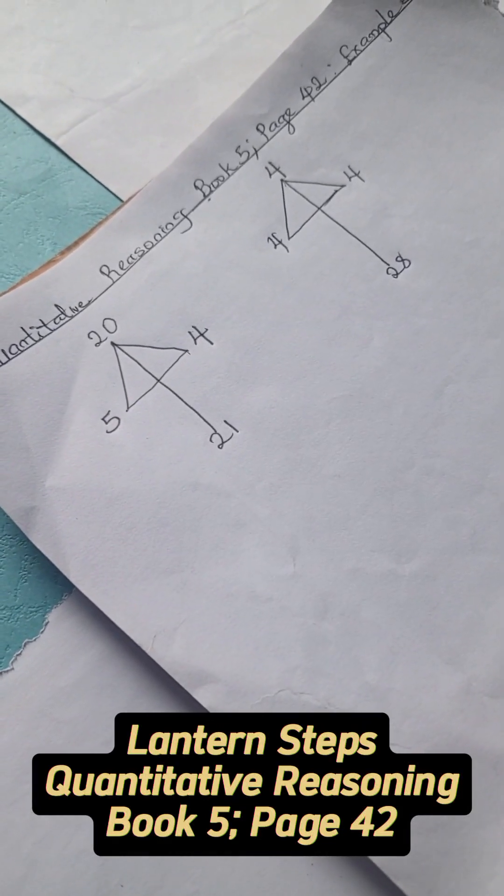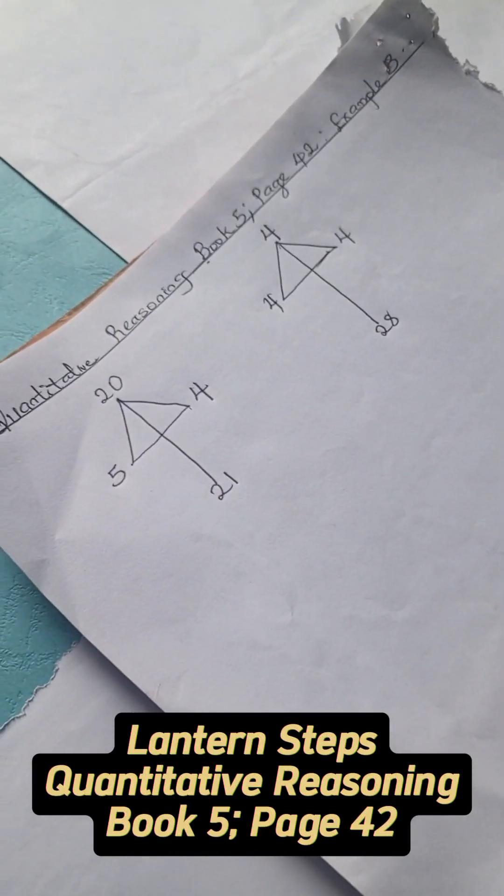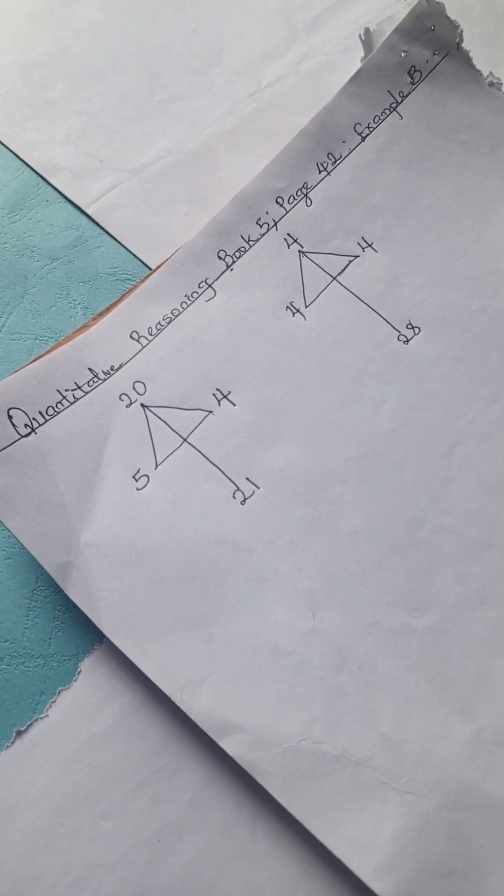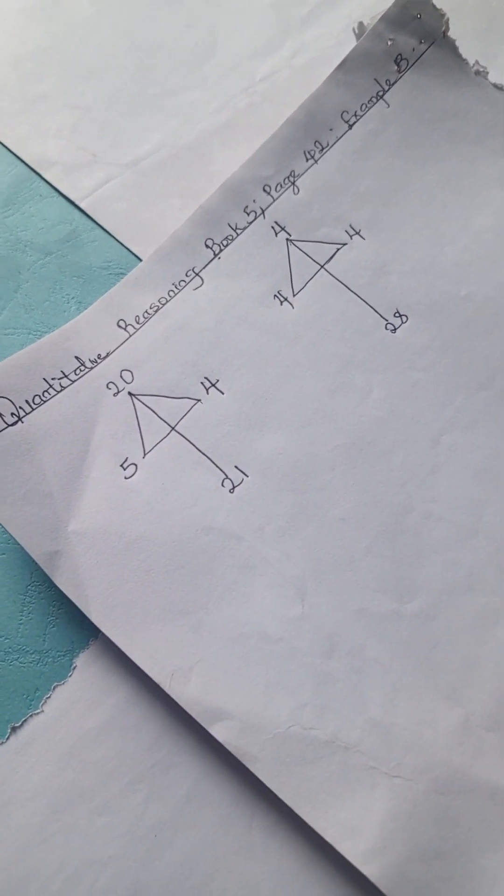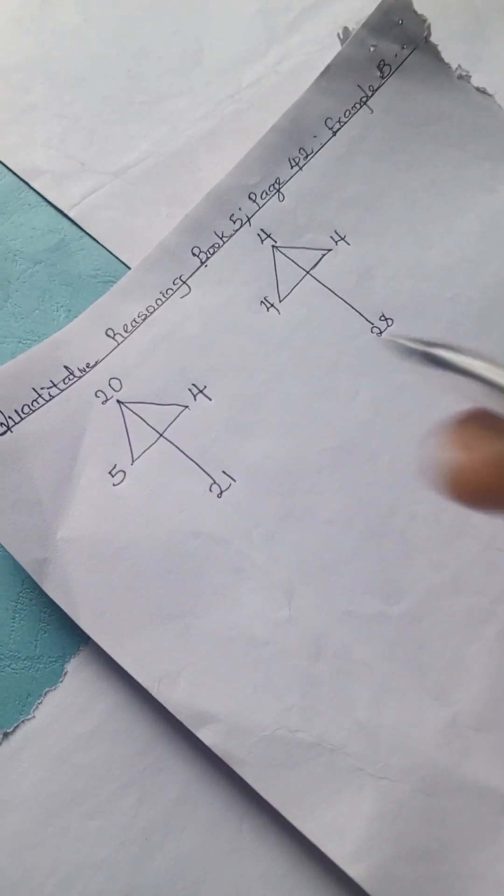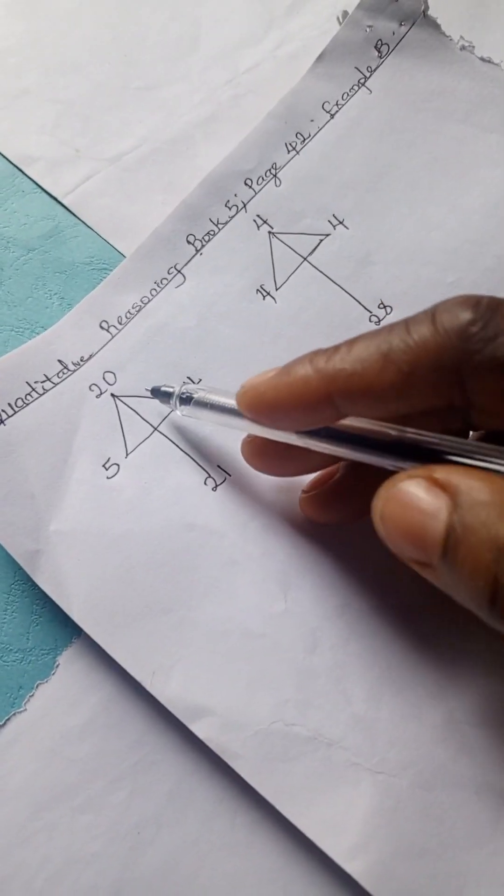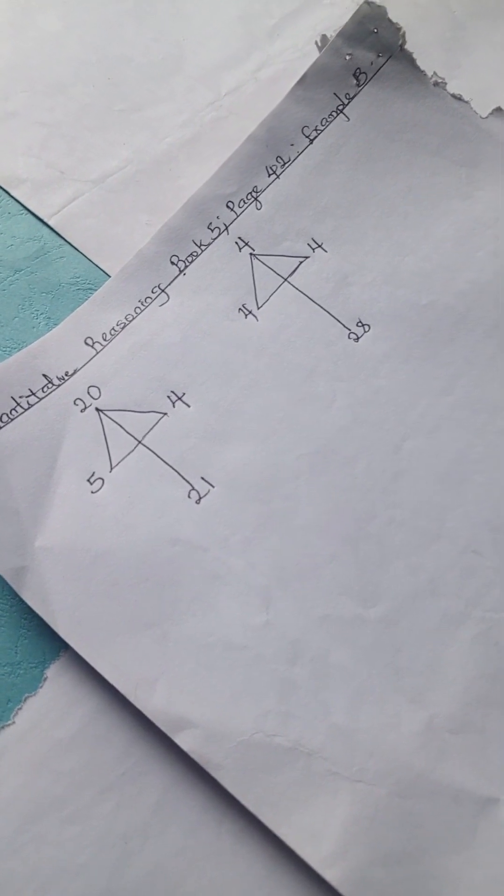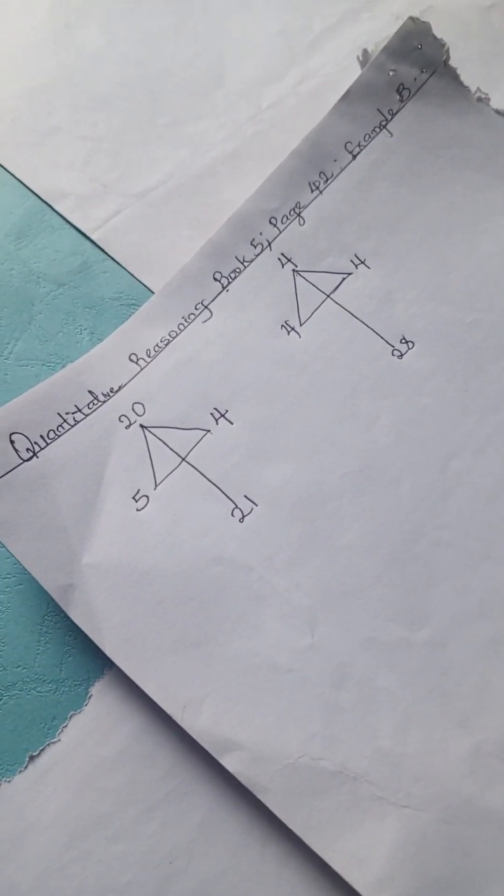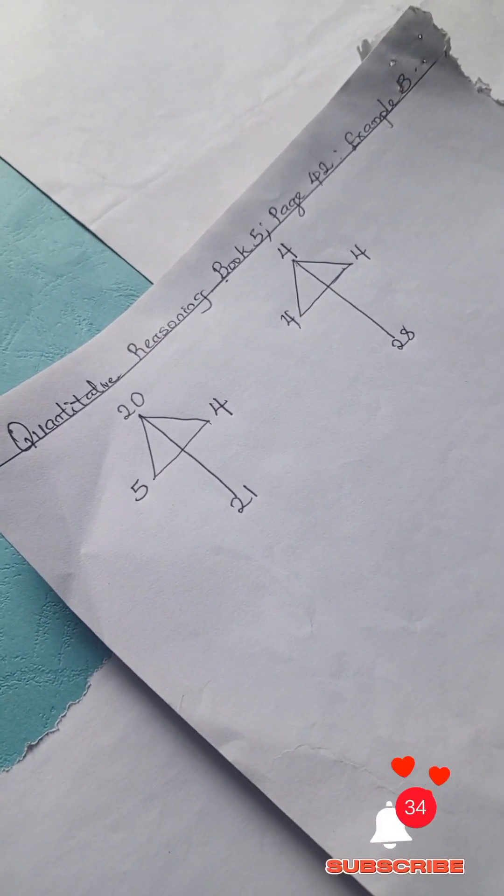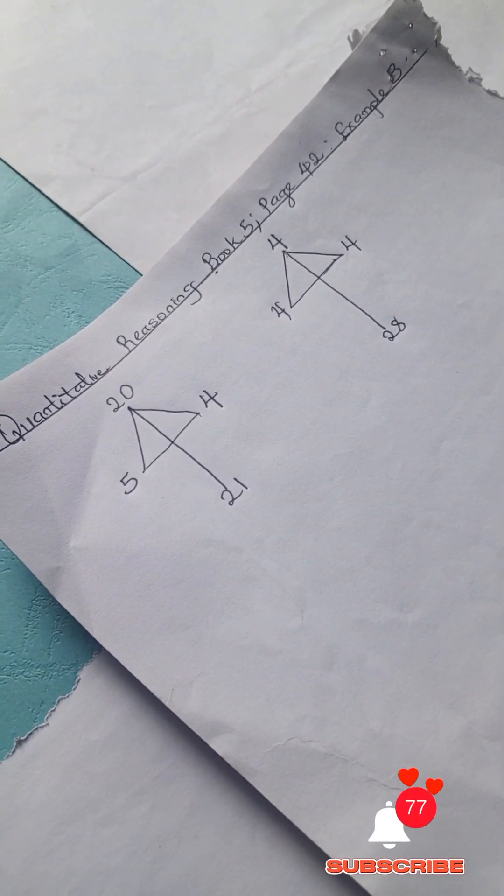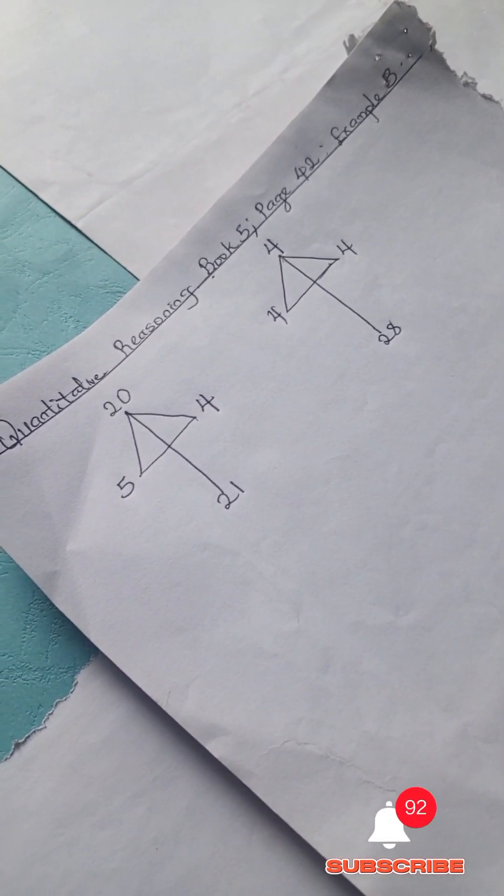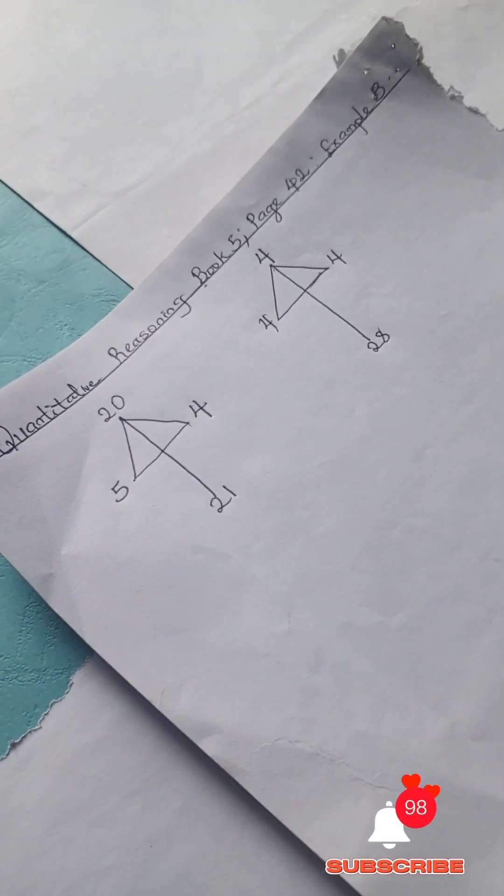Welcome to Quantitative Reasoning Solution Section. We have Lantern Step Quantitative Reasoning Book 5, Page 42, Example B. Thank you for joining in and watching this channel. If you're a new viewer, please subscribe for more quantitative reasoning solutions and basic math learning.